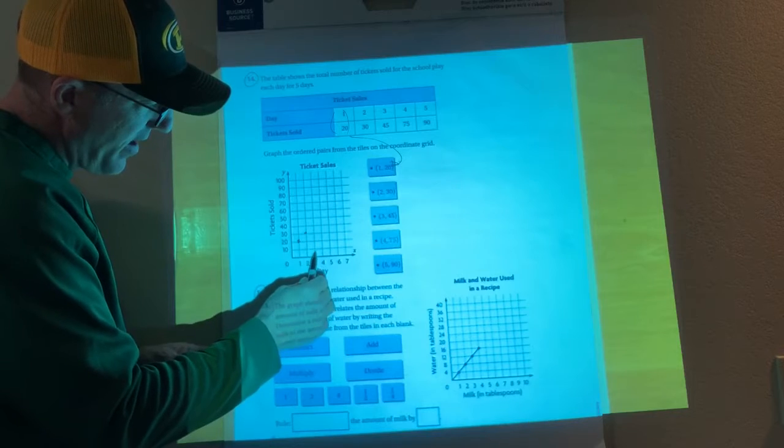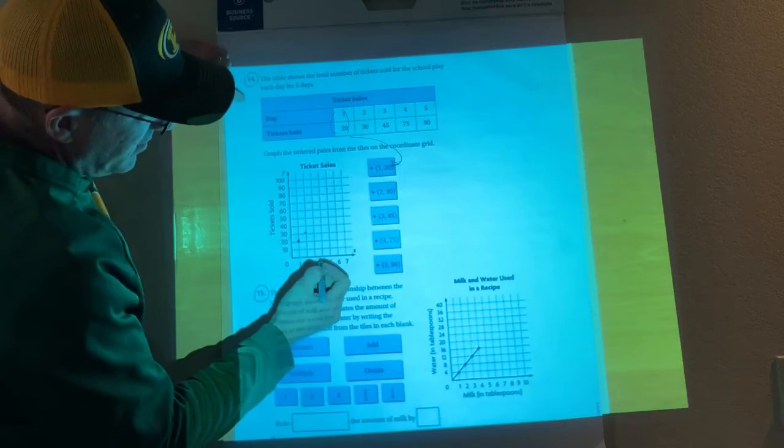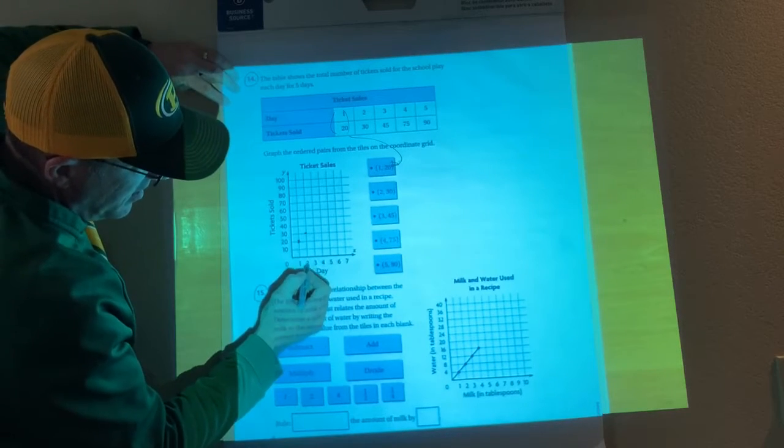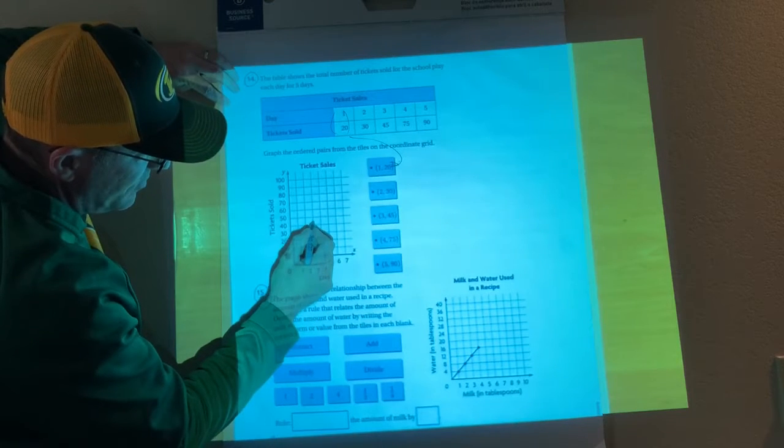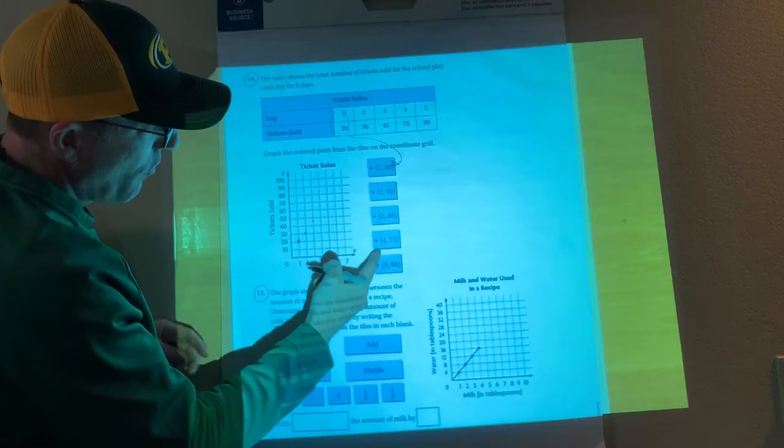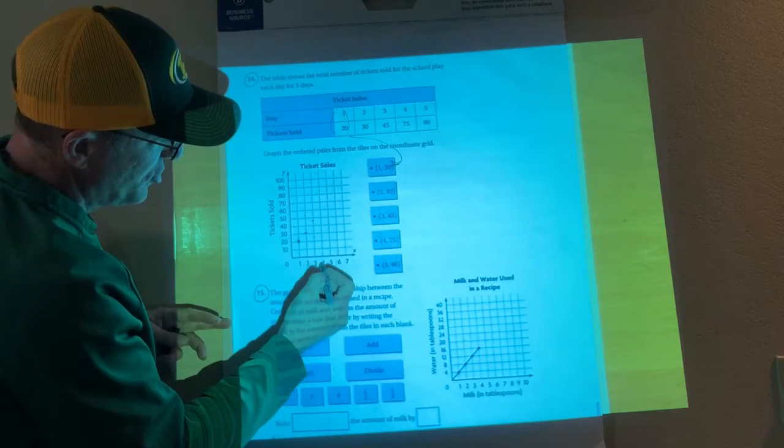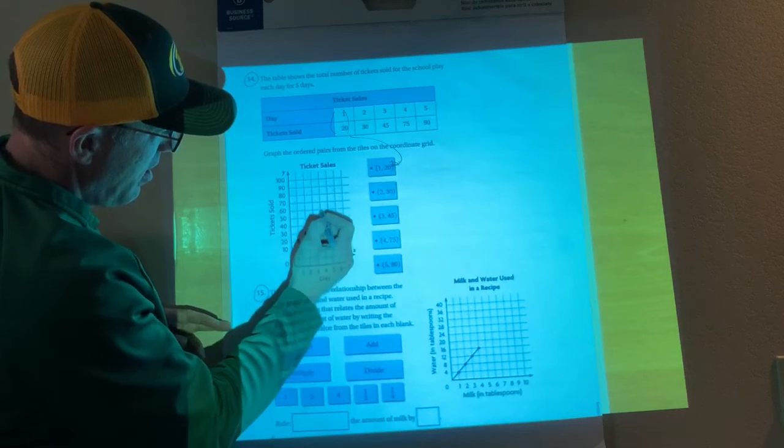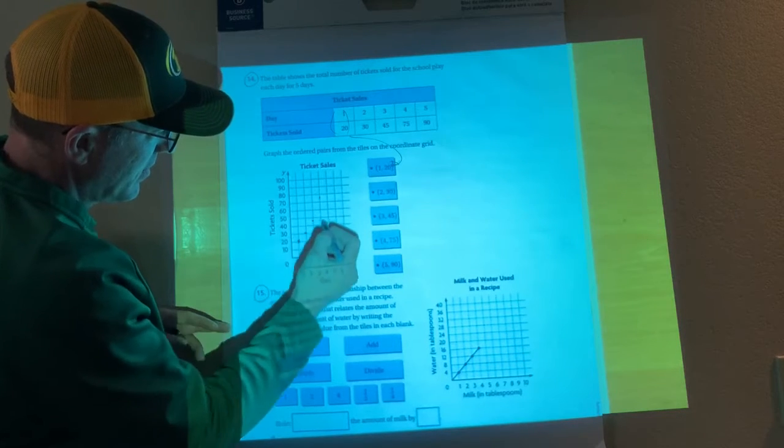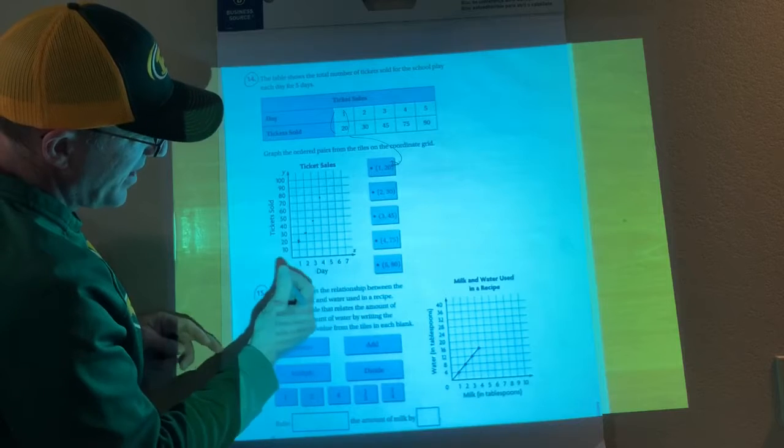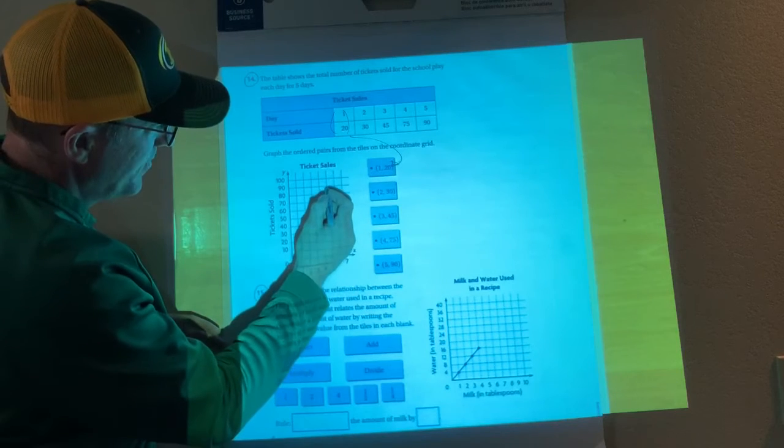4,75 - we get this huge jump all the way up to 75. And then 5,90 - over 5, up to 90.